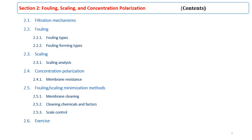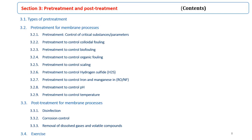Section 3 covers pre-treatment and post-treatment. In this section, you'll learn about the types of pre-treatment and how to increase membrane life by appropriate selection of pre-treatment and post-treatment according to the feed water quality. In the end, some exercises are presented.